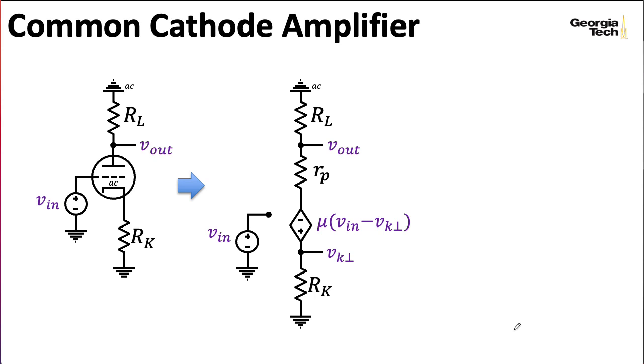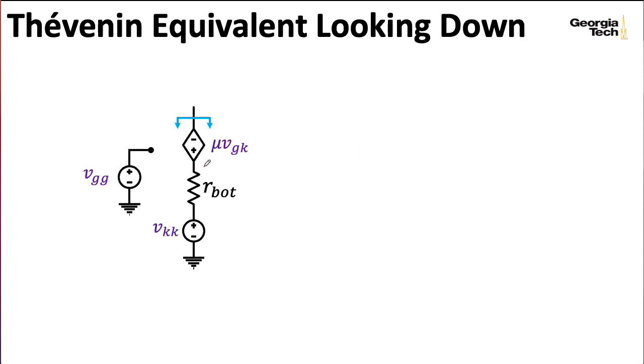I wanted to write them in a fairly generic way. I'm saying Thevenin equivalent looking down into the negative terminal of the voltage-controlled voltage source. I'm avoiding saying Thevenin equivalent looking into the plate, because I've deliberately left out RP here, and that is part of the tube. You could say something metaphysical, like say, we're looking into the inner plate, or something like that. I like to present it this way, and then add in RP later if I need it.